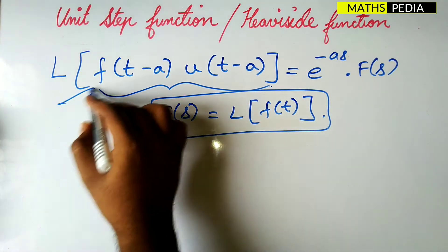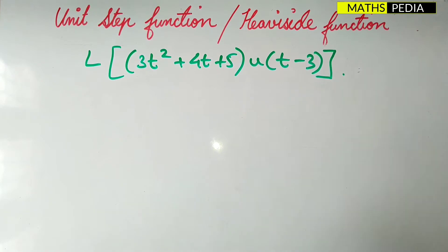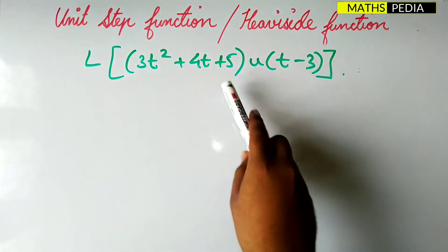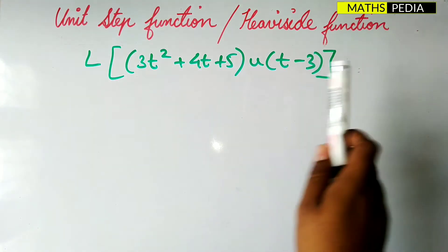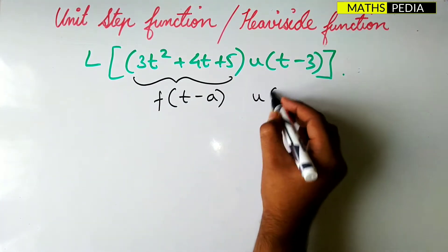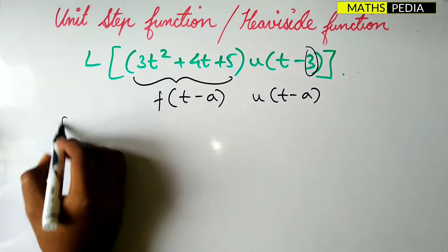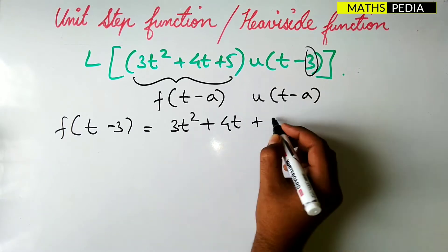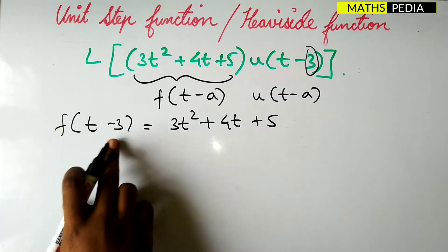We will solve problems using this formula. The first problem is: find the Laplace transform of (3t² + 4t + 5)·u(t-3). We observe that (3t² + 4t + 5) is f(t-a) and u(t-3) is u(t-a), where a = 3. So the first step: write f(t-3) = 3t² + 4t + 5.